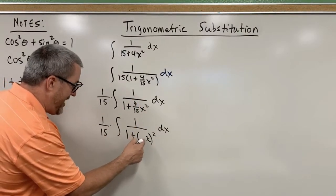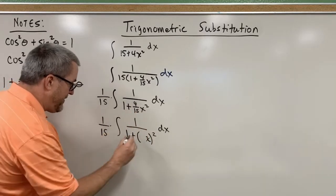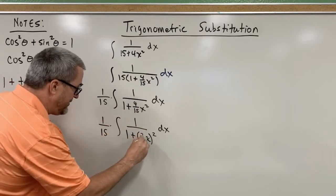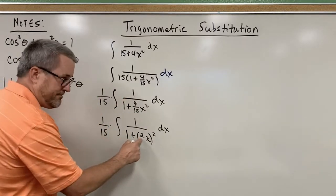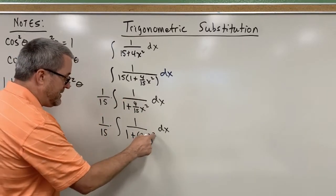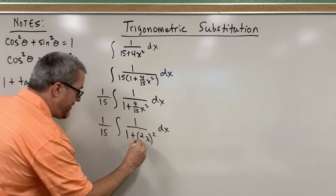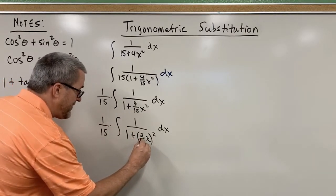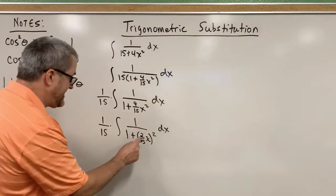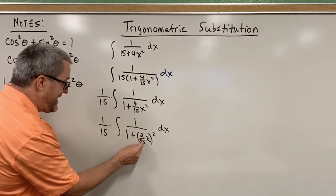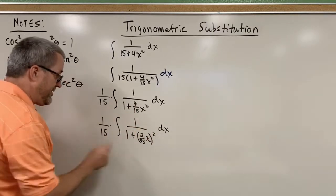We want to square and get 4 fifteenths. Well, the numerator of 2. 2 squared would give me the numerator of 4. Denominator. What denominator squared would give me a 15? The square root of 15. So the coefficient there would be 2 over the square root of 15. I hope you can see it. 2 over the square root of 15 squared would be 4 fifteenths.